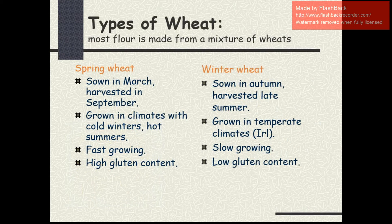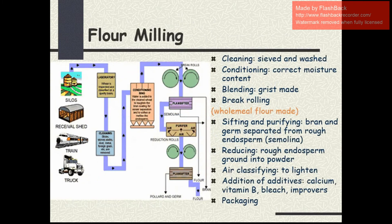This shows the types of wheat. Wheat is in two forms: one is spring wheat, another one is winter wheat. Spring wheat is sown in March and harvested in September. Winter wheat is sown in autumn and harvested in late summer. Spring wheat is grown in climates with cold winters and hard summers. Winter wheat is grown in temperate climates. Spring wheat is a fast-growing one and winter wheat is a slow-growing one. Spring wheat contains high gluten, whereas winter wheat contains low gluten.